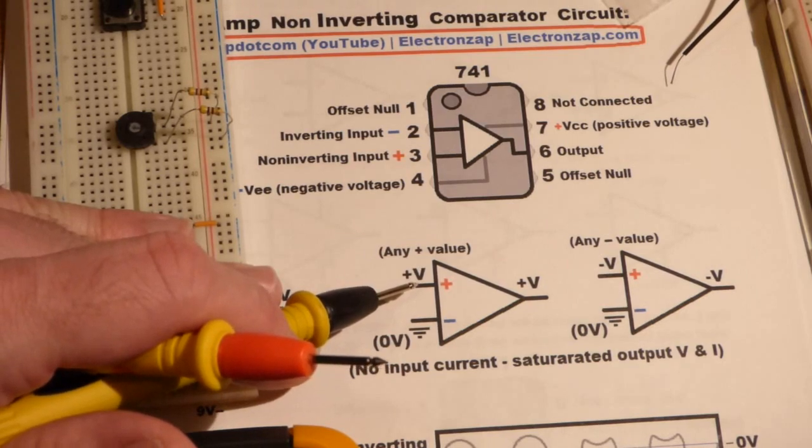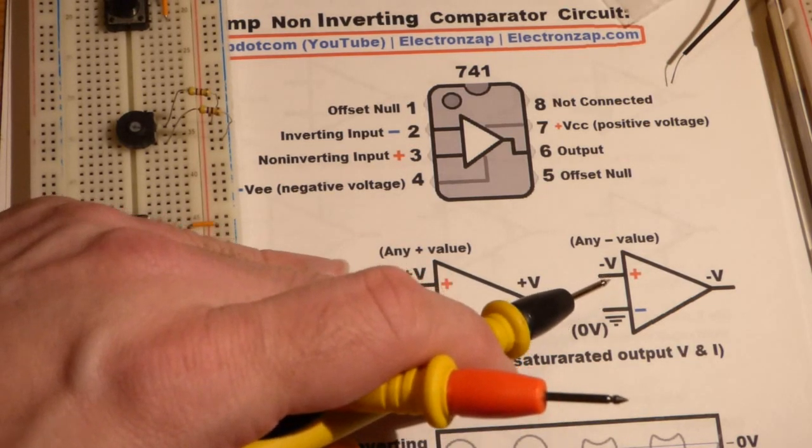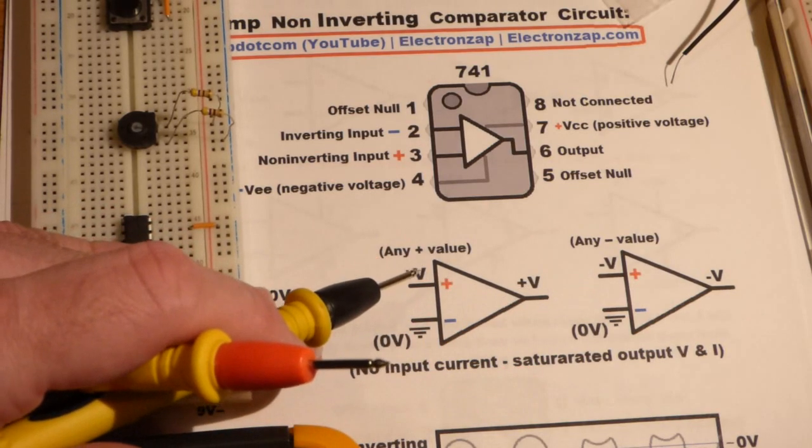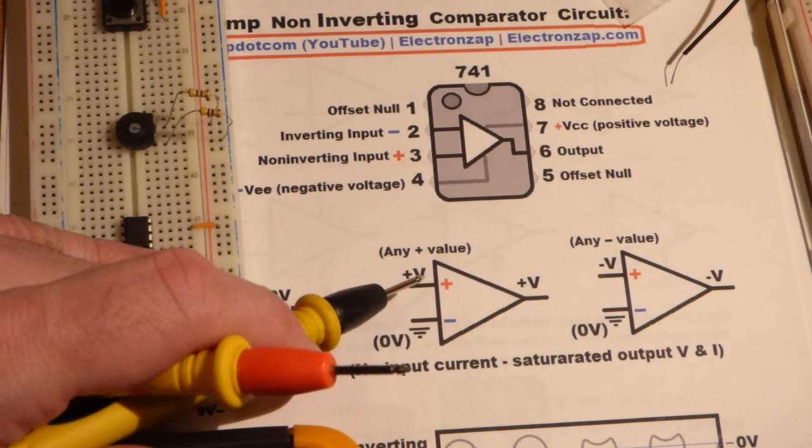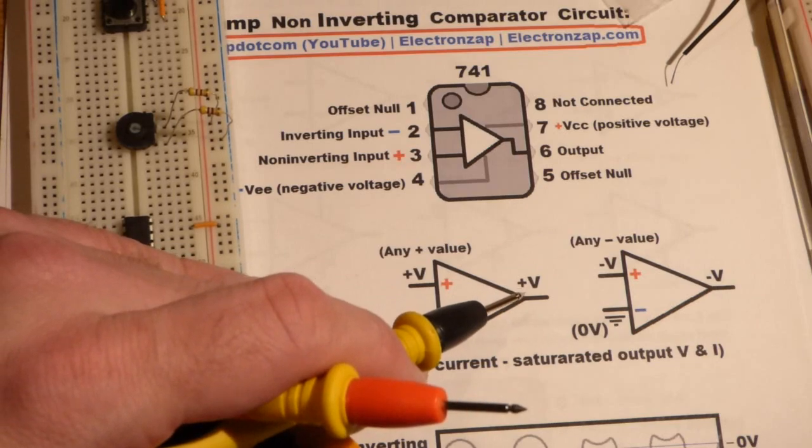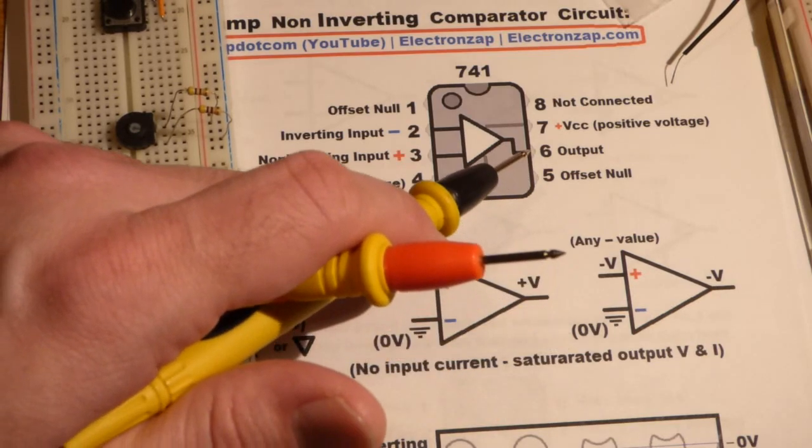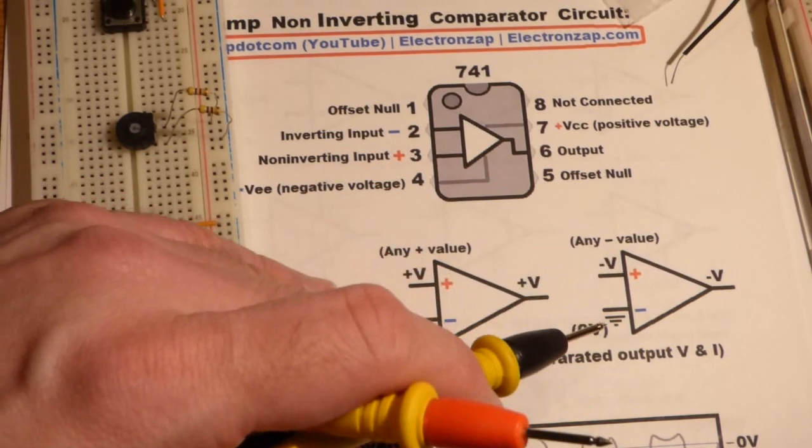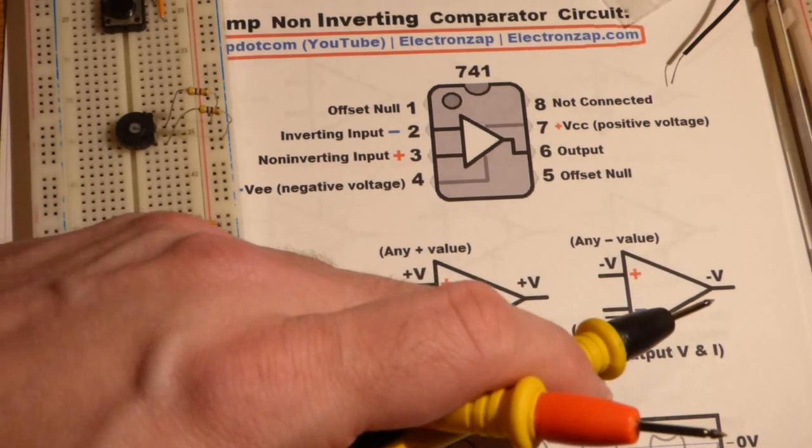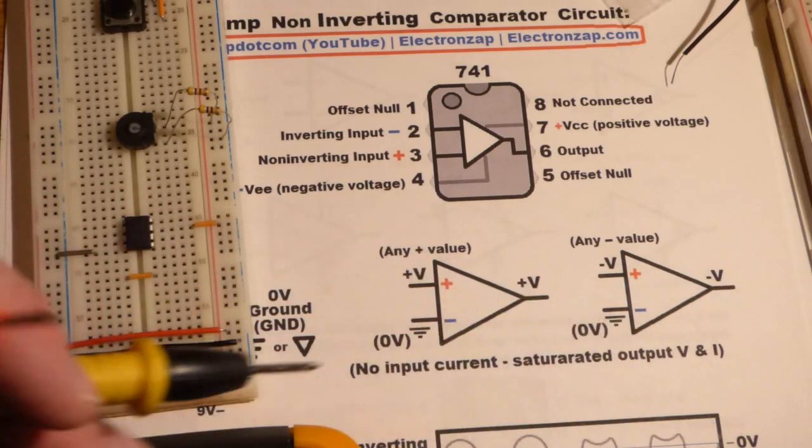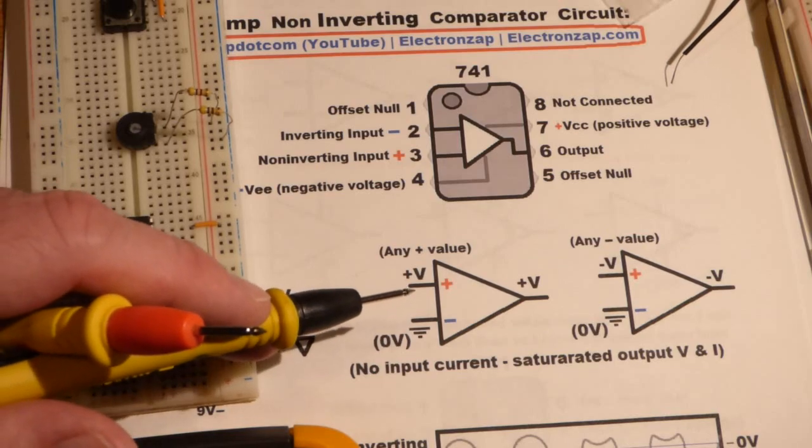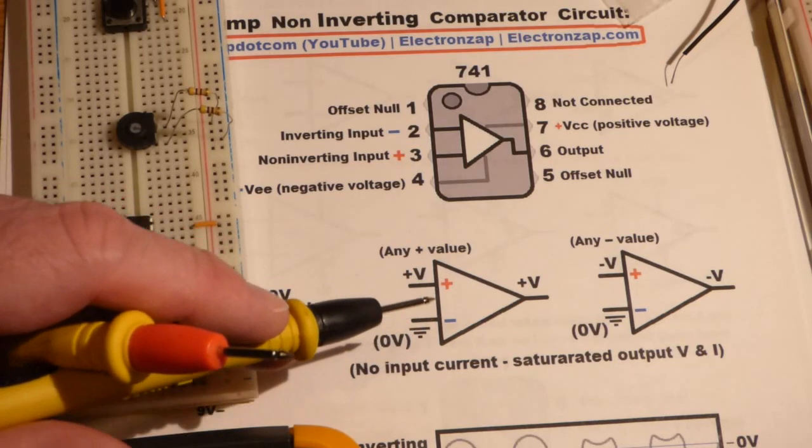The non-inverting pin, we're going to be changing the voltage. We'll either give it a positive voltage or a negative voltage. If we give it a positive voltage, we'll get an output of a positive voltage at pin 6. If we give it a negative voltage, a voltage below 0 volts, we'll get a negative voltage at the output in relationship to ground.